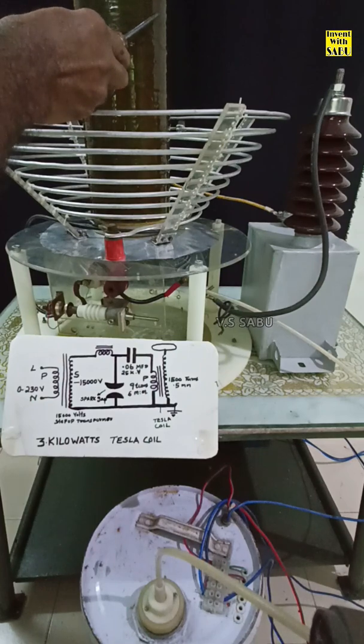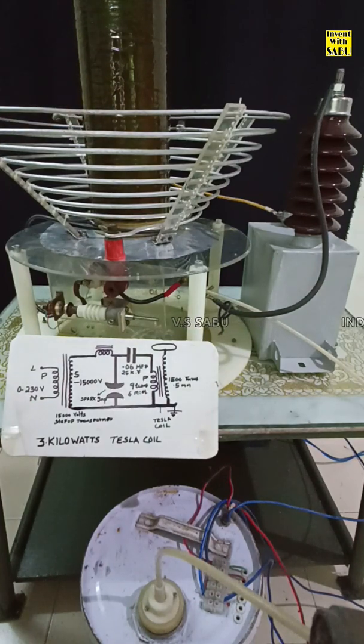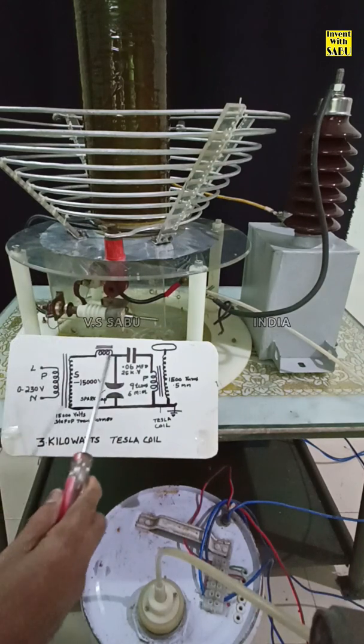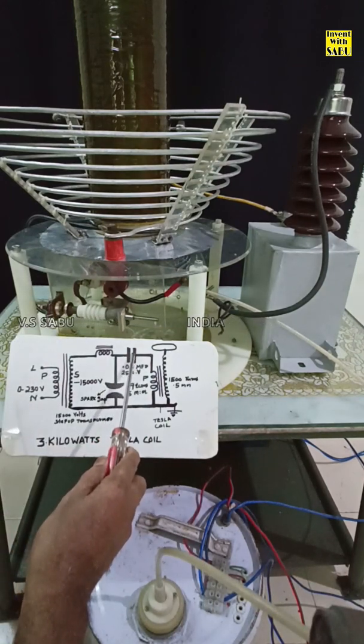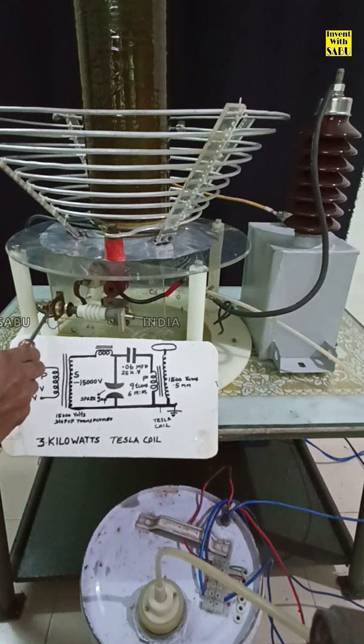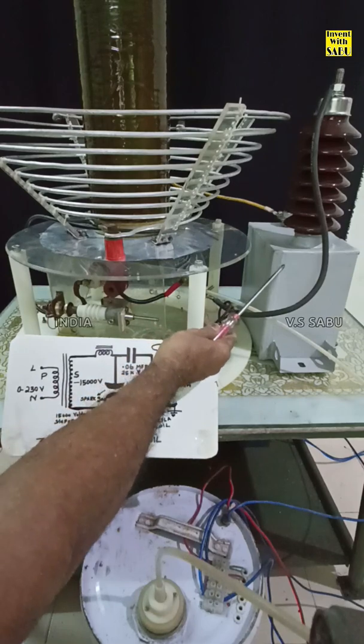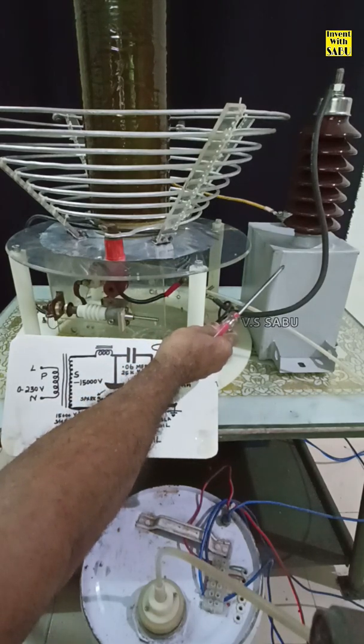5 inch PVC pipe, total length is 1 meter. This is the spark gap, 6mm is set. This is the high voltage capacitor, 0.06 MFD 33000V.